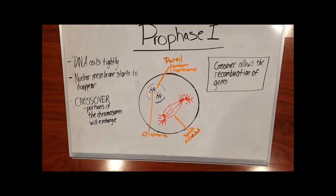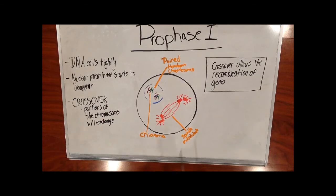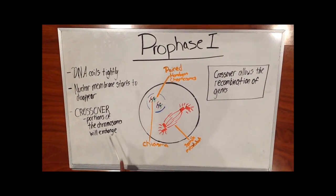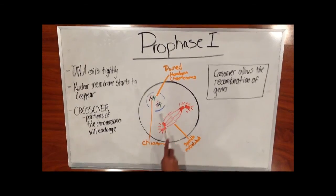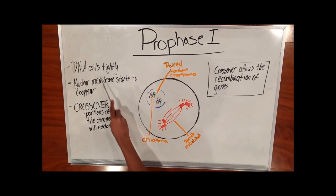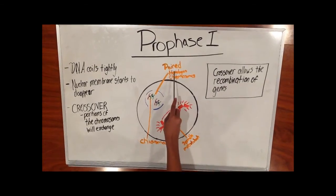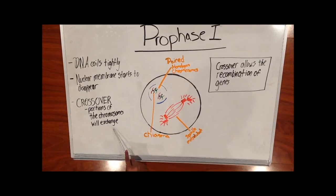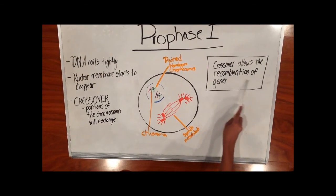Now the cells enter meiosis 1. First, in prophase 1, the DNA coils tightly and binds together. Once the nuclear membrane starts to disappear, as depicted in the picture, crossover occurs. When the DNA coils pair together in the form of homologous chromosomes, portions of the chromosomes will exchange. This allows the recombination of genes.